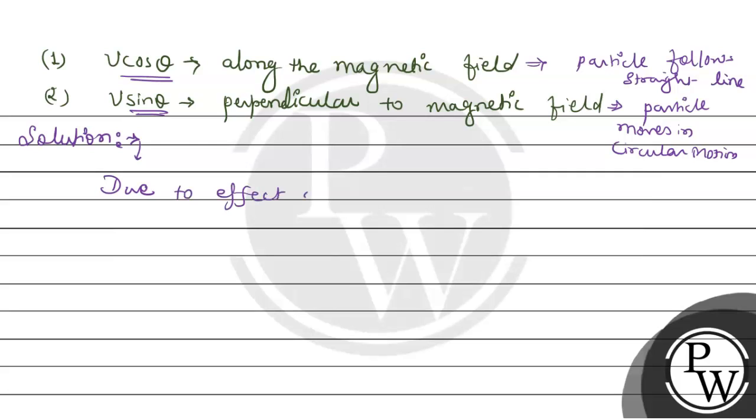Due to effect of V sin theta and V cos theta, particle follows helical path. And radius of helical path, that is R, equals M V sin theta upon QB.